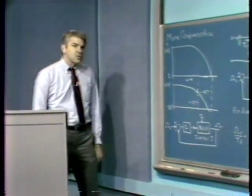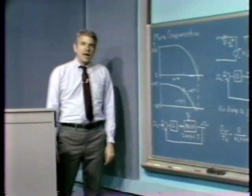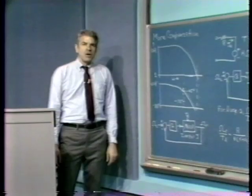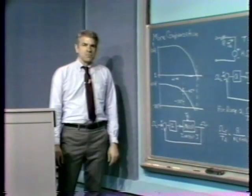Today I'd like to look at somewhat more complicated modifications of the loop transmission — in particular, ones that change the dynamics associated with the loop transmission. The simplest thing we can do is to add a dominant pole to the system.